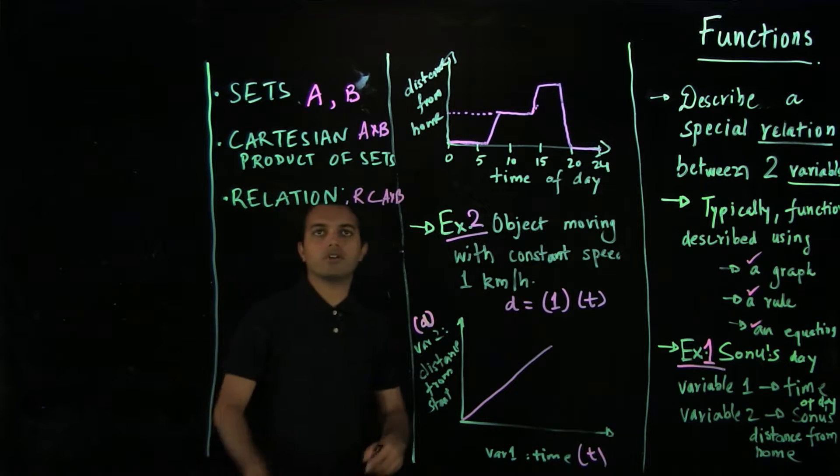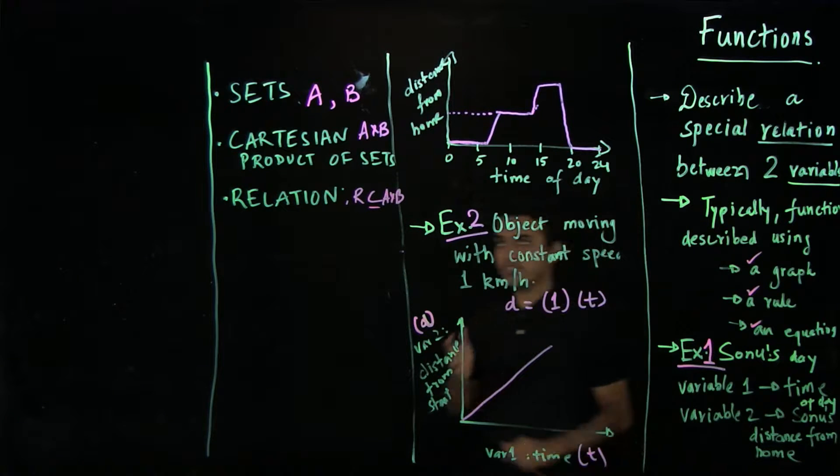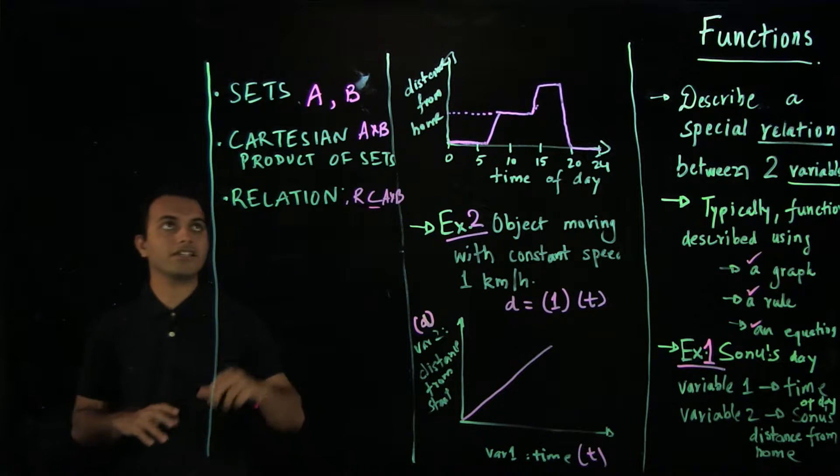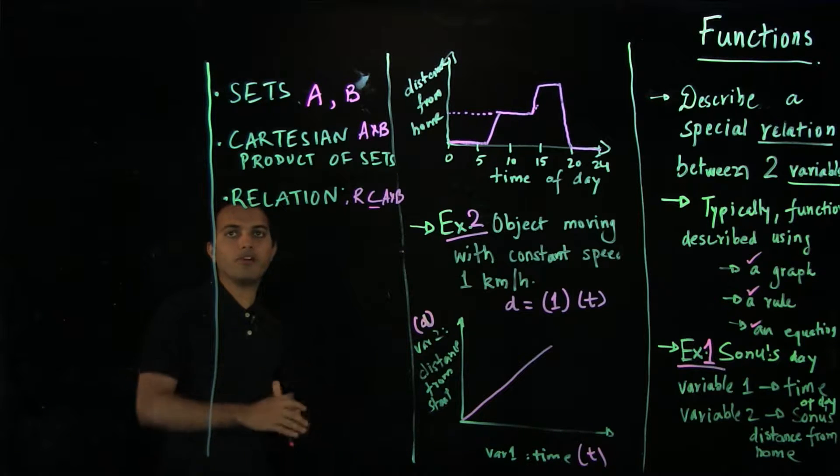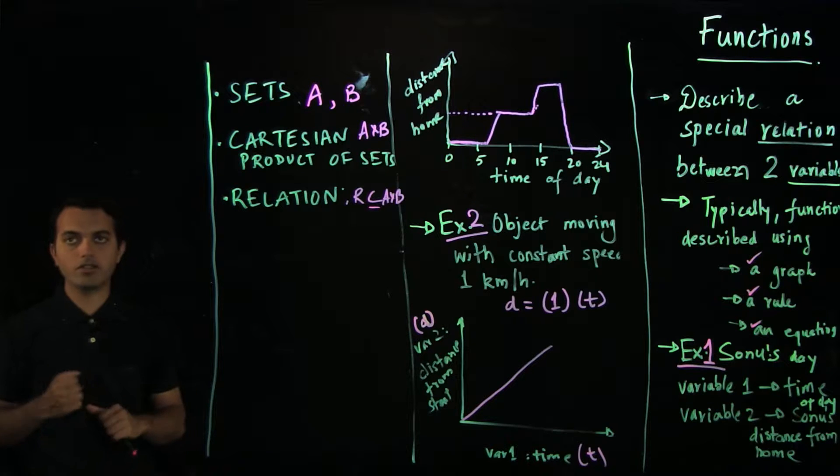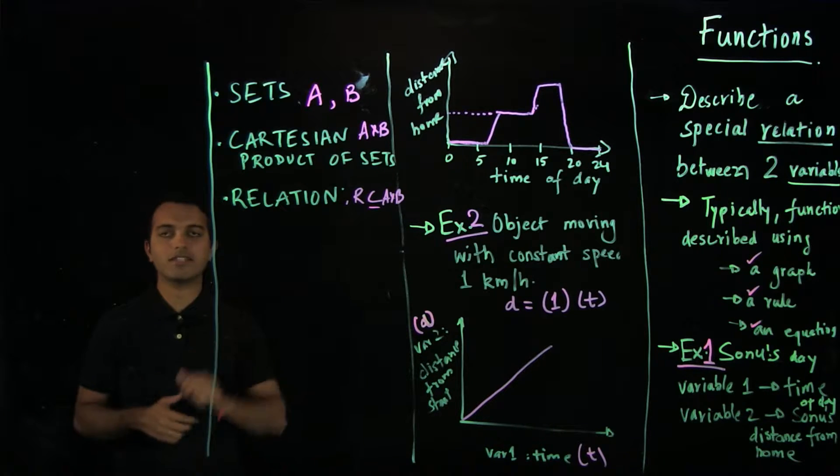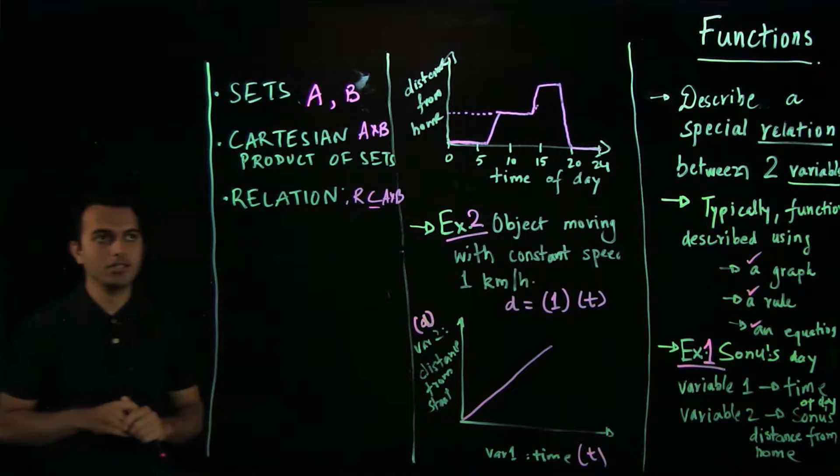So, a relation was a subset of A cross B. And we also briefly went over how many elements are there in the Cartesian product. And the number of relations would essentially be the power set of the Cartesian product. So you can also figure out how many relations there are for each pair of sets A comma B.